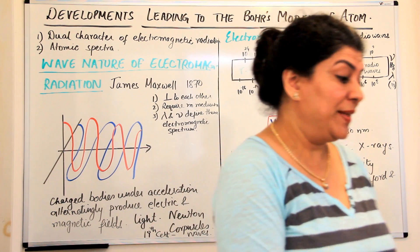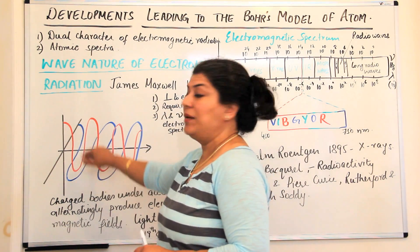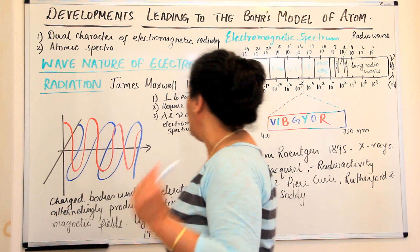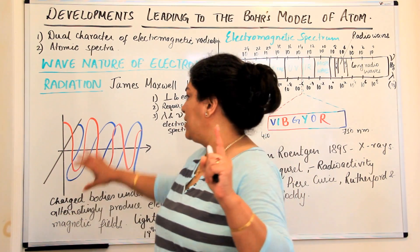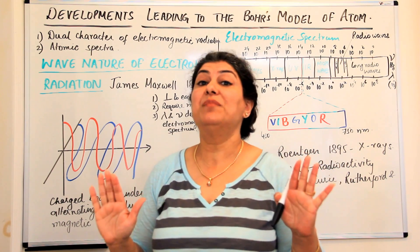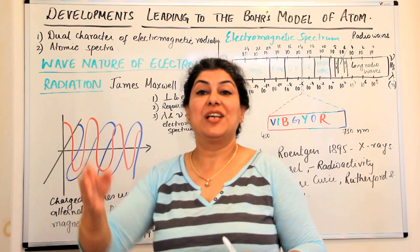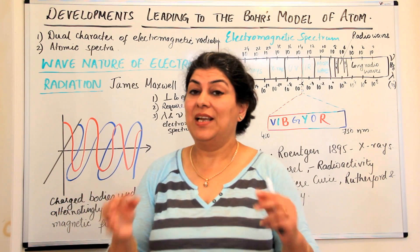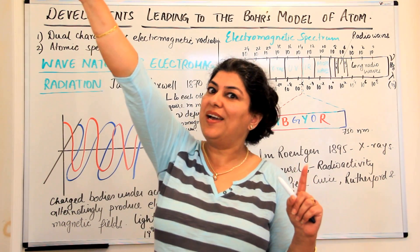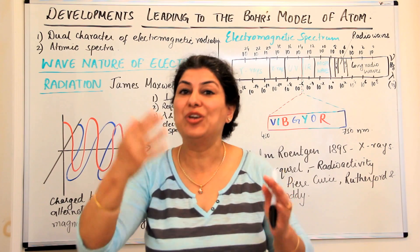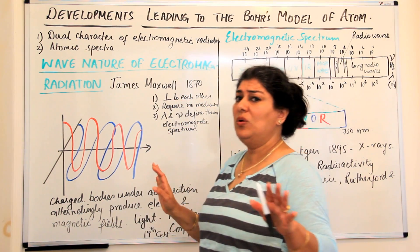Maxwell stated that the electric and magnetic fields are perpendicular to each other. He also said that electromagnetic radiations do not require a medium to travel, unlike sound waves or water waves. That is why the light from the sun can travel through a vacuum and come to us through the earth's atmosphere — electromagnetic radiations require no medium.